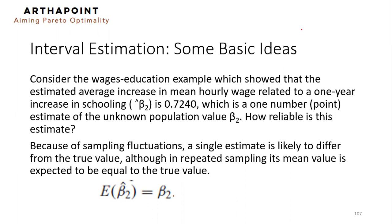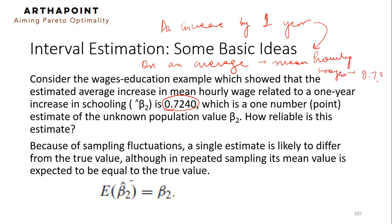What we also did in that example is that we went ahead and we calculated what would be the average increase in mean hourly wages when there is one year increase in schooling. And we came up to a number which was 0.7240. This number indicates that as you increase the number of schooling by one year, on average, the mean hourly wages increased by 0.72 units.